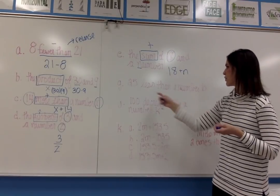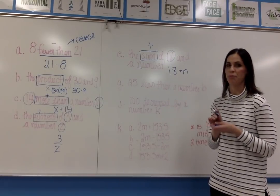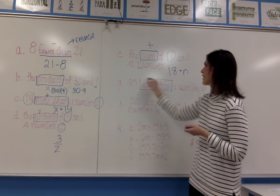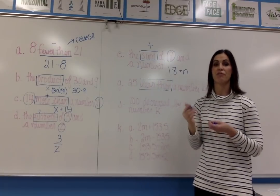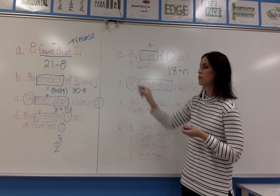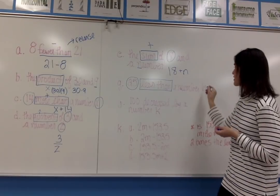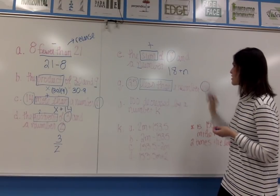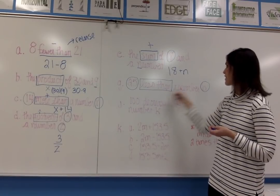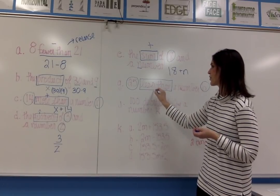My next example: 25 less than a number B. When it says less than, I'm going to reverse the order of my values. My first value is 25 and my second is unknown but represented by B. Since I have the phrase less than, I have to reverse and put B first, then minus 25.